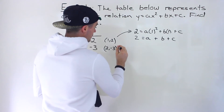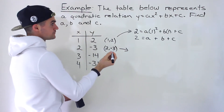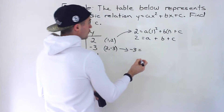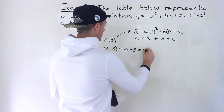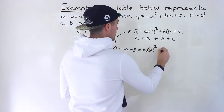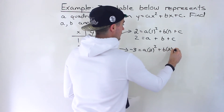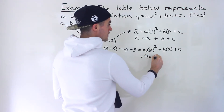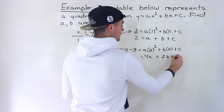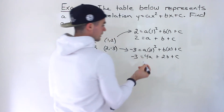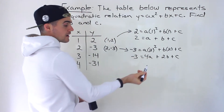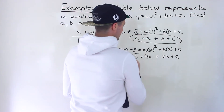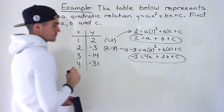Then we take the next point, 2 and negative 3. We plug in negative 3 for the y value, and plug in 2 for the x values. 2 squared is 4 times a, so that gives us negative 3 equals 4a plus 2b plus c. That's equation two.